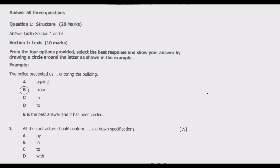Welcome viewers to another episode on ASUG 12 exams. In this episode we're going to focus on the structure section of the English 2023 paper. We are going to start with Section A which focuses on Lexis and Collocation, worth 10 marks. The instruction reads: from the four options provided, select the best response and show your answer by drawing a circle around the letter.